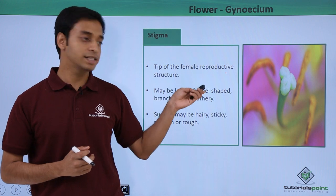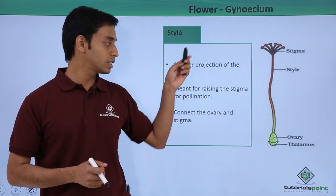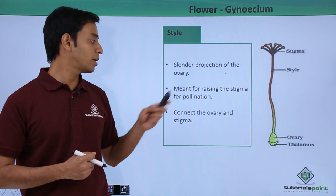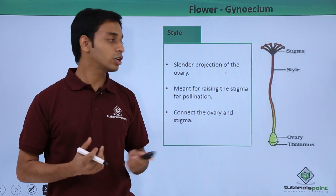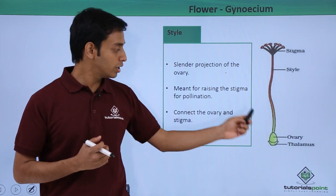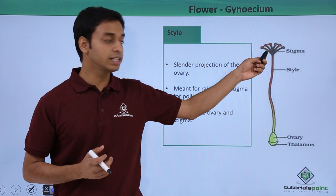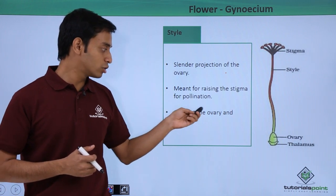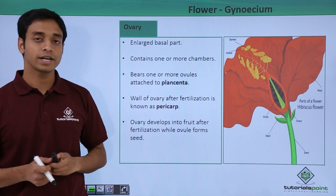The next part is the style, which is the slender projection of the ovary — the filament part. It is meant for raising the stigma for pollination. As you can see, the style raises the stigma so that it is exposed to a larger surface area and can easily trap pollen grains from pollinating agents. The style is the connection between the stigma and the ovary.